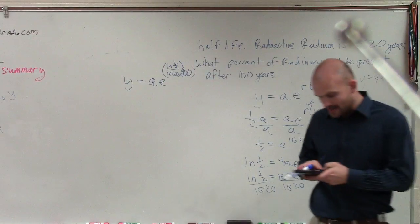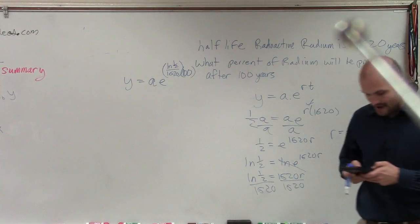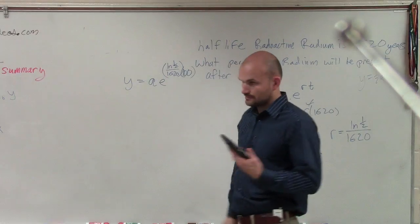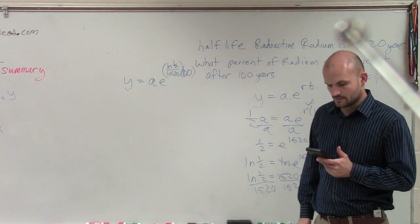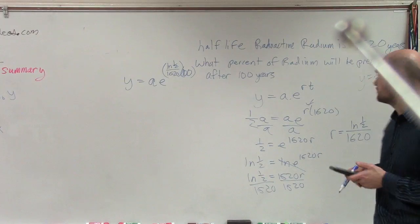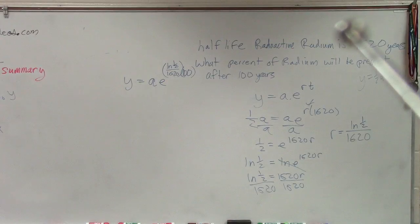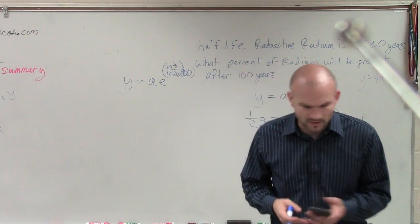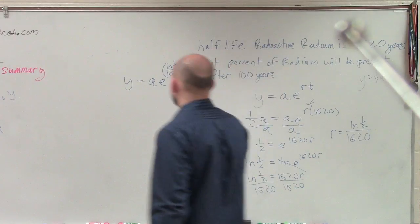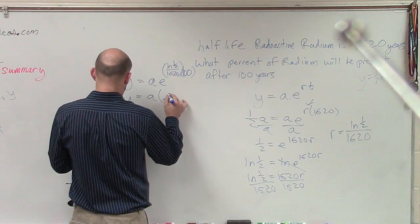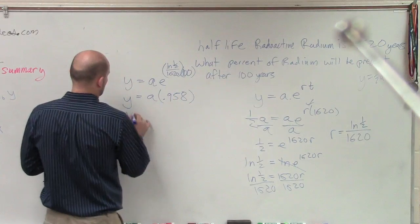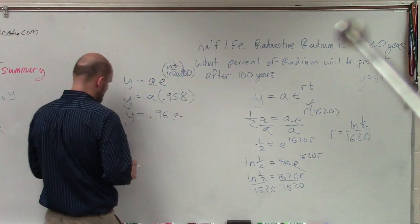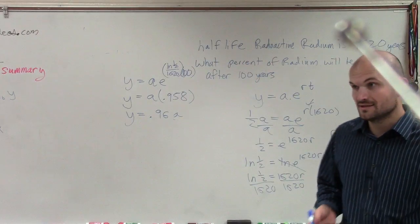And in my calculator, yes, so in my calculator, I'm going to do ln of 0.5 divided by 1,620, and I'm going to multiply that by 100. Did I do that ln of 1/2? Did I write my thing right? OK, then I'm going to take my E, raise it to that answer. And what you guys will have is you're going to have 0.958. So Y equals A times 0.958, or Y equals 0.96 times A, as I round this out. OK, so I'm just going to round that to 0.96.